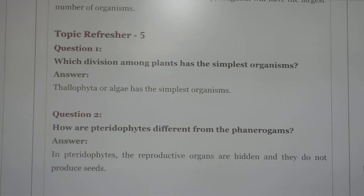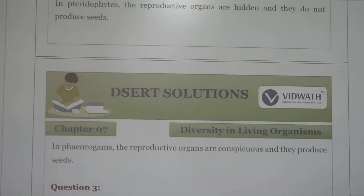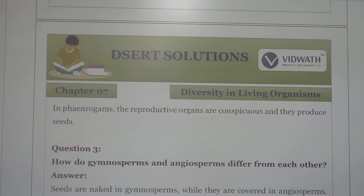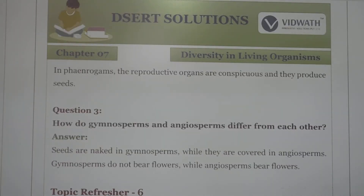Next question: how are pteridophytes different from gymnosperms? In pteridophytes, the reproductive organs are hidden and they do not produce seeds. In gymnosperms and angiosperms, the reproductive organs are prominent and they produce seeds. Gymnosperms and angiosperms differ in that seeds are naked in gymnosperms while they are covered in angiosperms. Gymnosperms do not bear flowers while angiosperms do bear flowers.